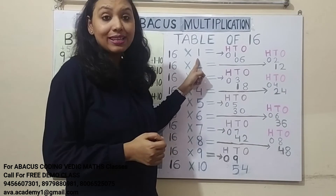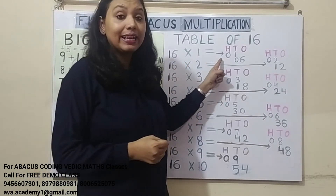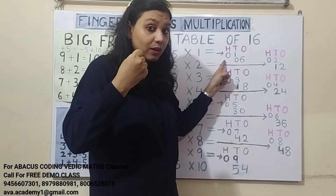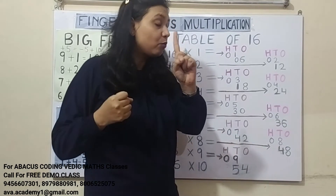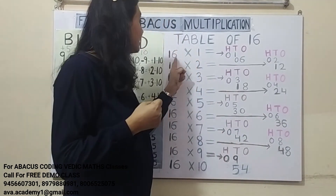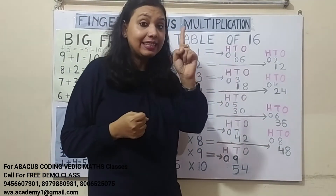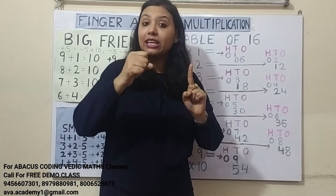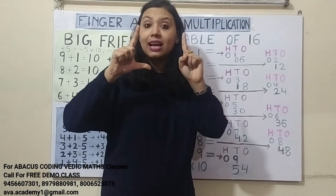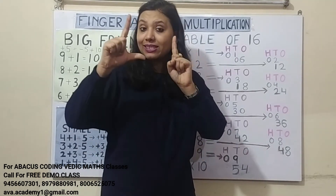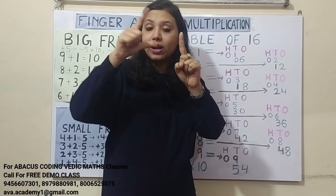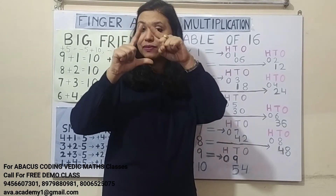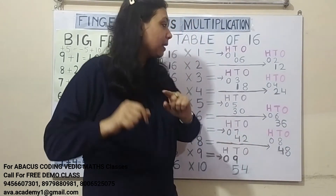16 ones are: 1 ones are 1 — in 100's we represent 0, in 10's we represent 1. 6 ones are 6 — in 10's we represent 0, and in 1's we represent 6. The answer is 16: in 10's it's 1, and in 1's it's 6. So the answer is 16.